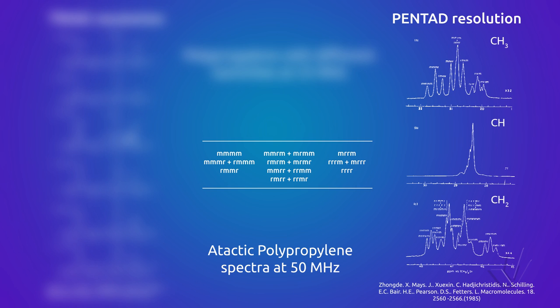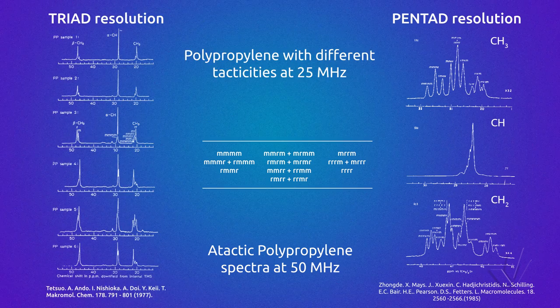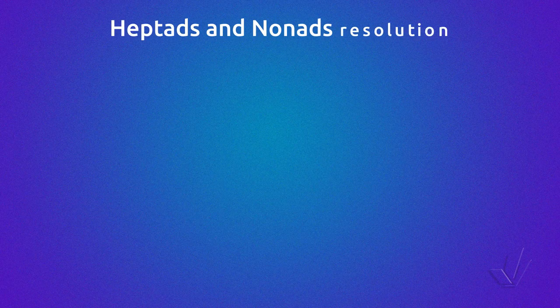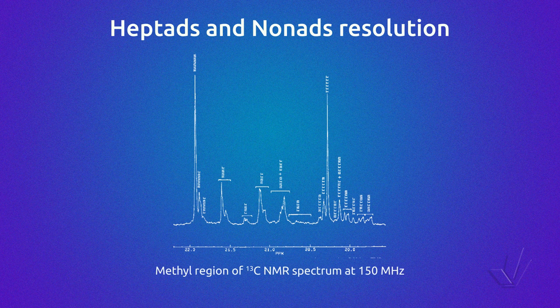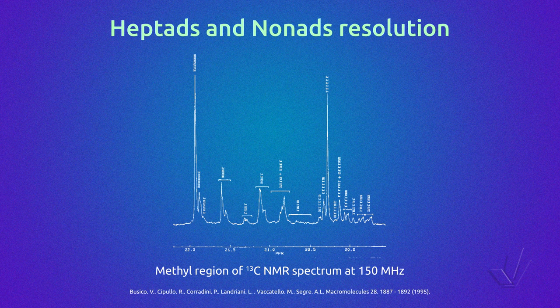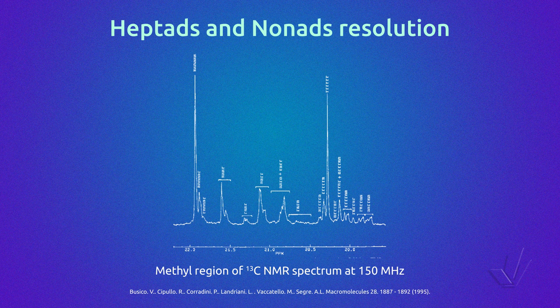The sequence of each methyl signal is shown above the peak and also in the table. In equipment with a higher magnetic field, it is possible to see heptad and nonad sequences, as can be seen in this spectrum taken at 150 MHz for the carbon — that is, in a 600 MHz equipment.